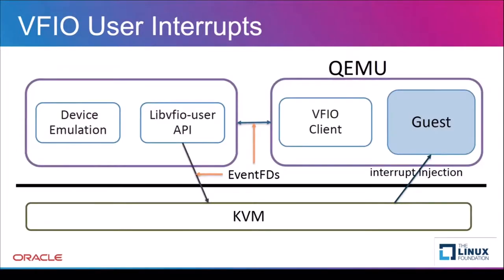Setting up interrupts uses two commands: getirqinfo and setirqinfo. To set up the IRQs, the client requests from the server the number and types of IRQs the device wishes to set up. The server sends a reply with a flag set — the flags indicate how the server is able to process the interrupts, whether eventfd signaling is used, whether mask and unmask operations are supported, and some details about the setup. Each message can specify the action requested on the set of IRQs in the payload; the action slot can be used to mask and unmask the interrupt and trigger it, and indicate the type of data being transferred. For each interrupt, the IO eventfd is obtained from the kernel and sent to the server with the setirqinfo command. The server can then signal an interrupt by directly injecting interrupts into the guest via the event file descriptor provided by the client.